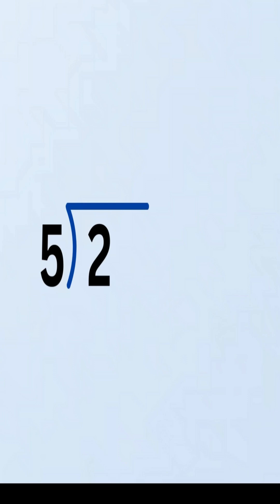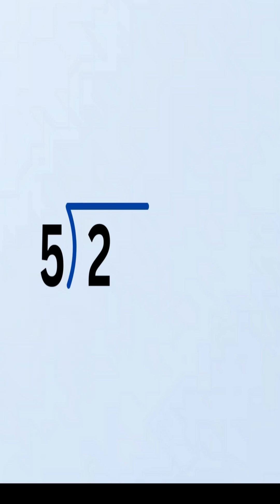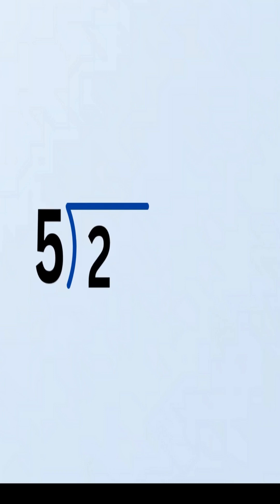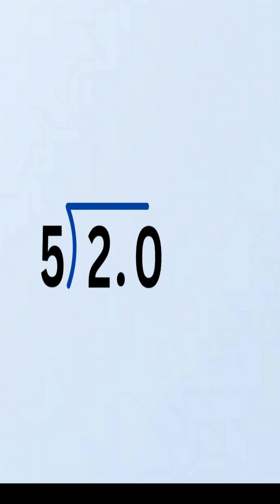How many times does 5 go into 2? Well, 5 doesn't go into 2, because 5 is bigger than 2. We place a decimal point after the 2, and don't forget to add a 0 right after it.